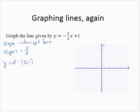Plotting the y-intercept at (0, 1). Now using the slope. Since it's negative five-halves, I'm going to think of it as negative 5 over 2, which means I'm going to rise negative 5. That's the same as thinking fall 5 and run 2.